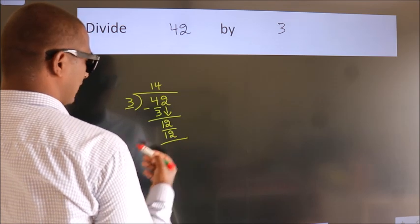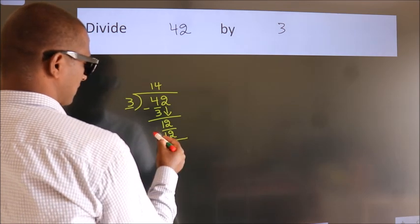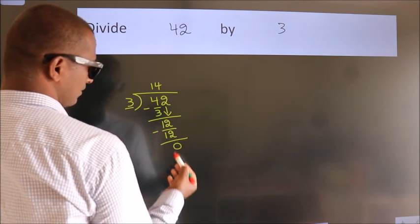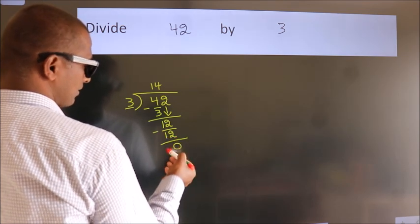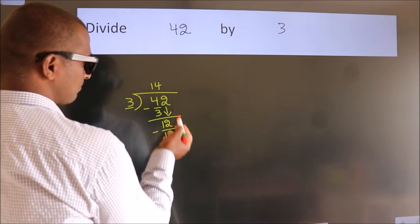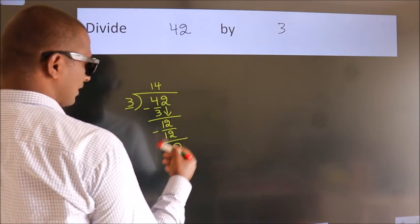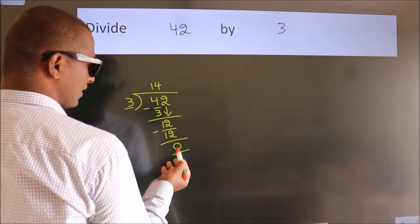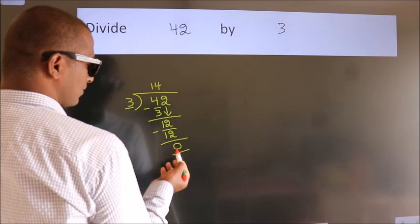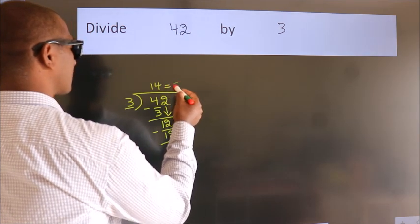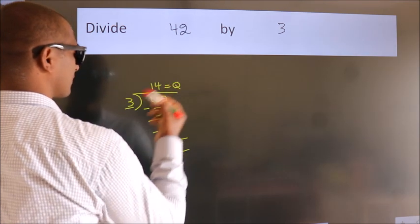Now we subtract. We get 0. After this, no more numbers to bring down, and we got remainder 0. So this is our quotient.